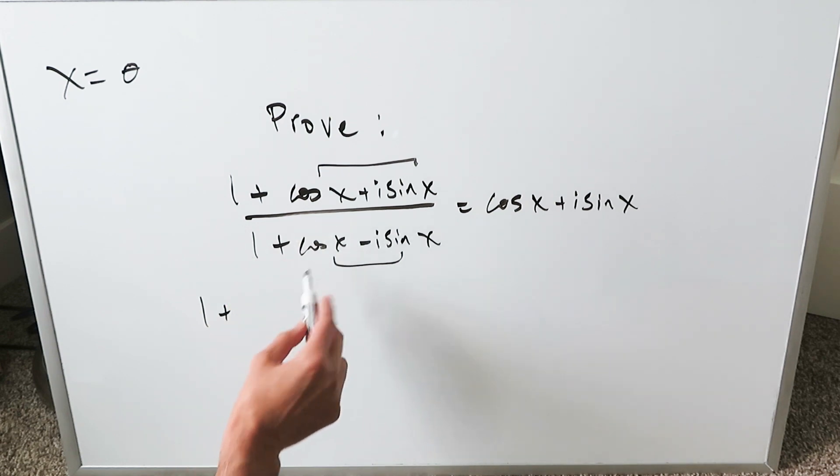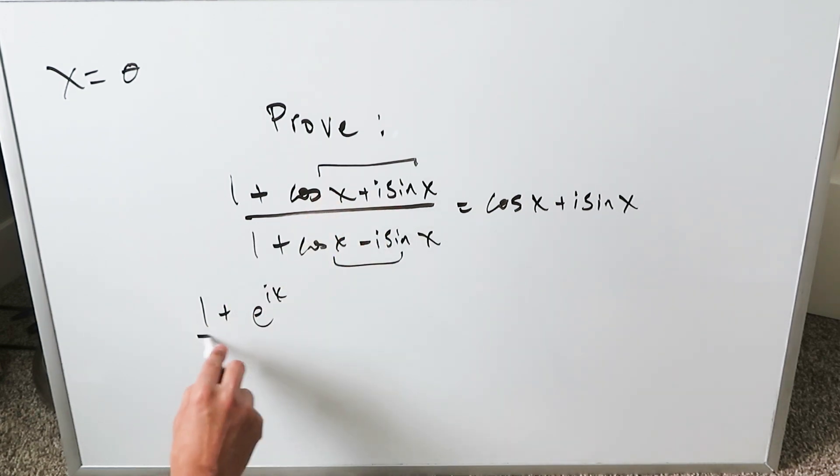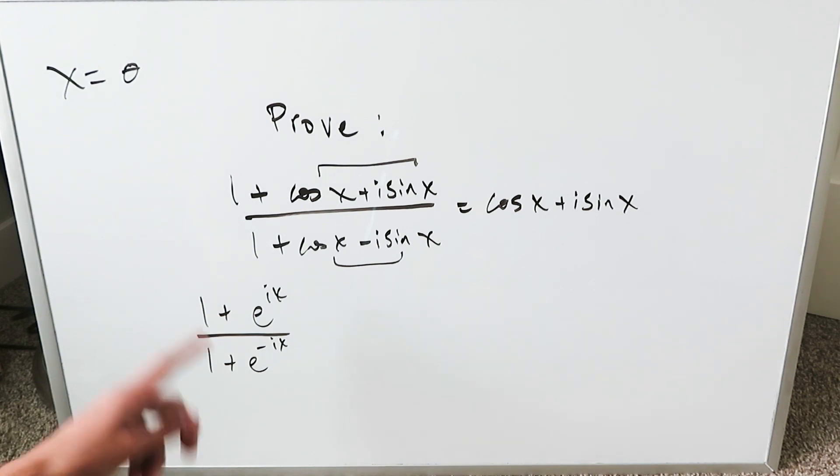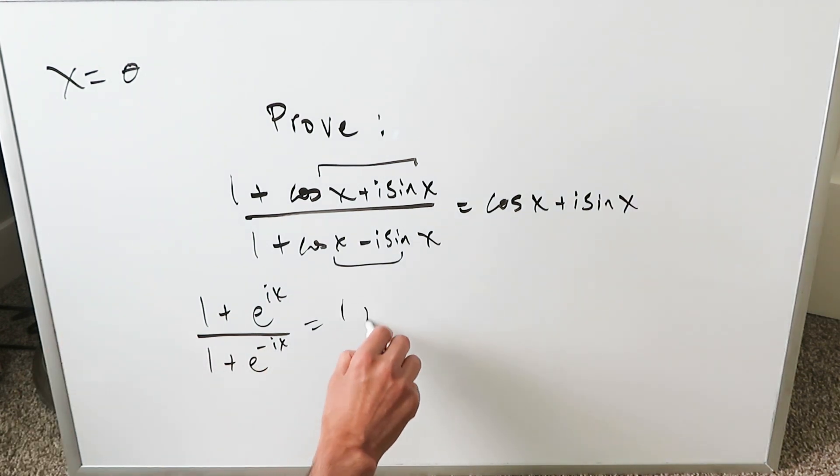You can rewrite the numerator as 1 + e^(ix) and the denominator as 1 + e^(-ix). Getting rid of the negative exponent using laws of exponents: (1 + e^(ix)) divided by (1 + 1/e^(ix)). It's the reciprocal.